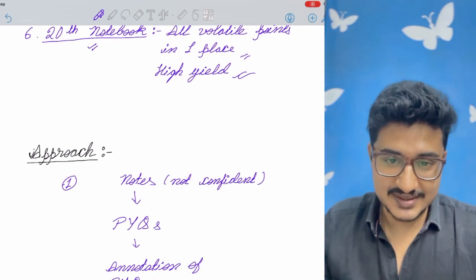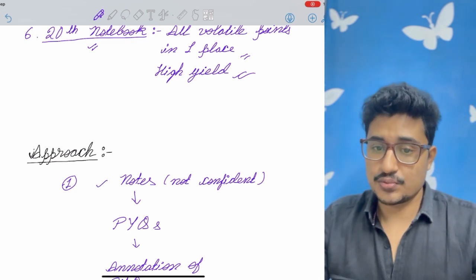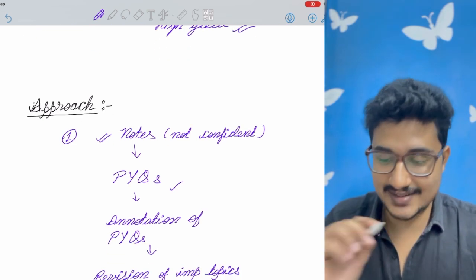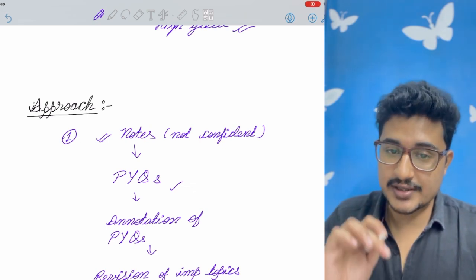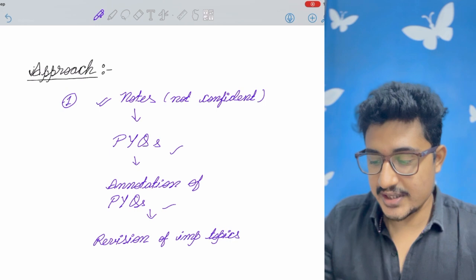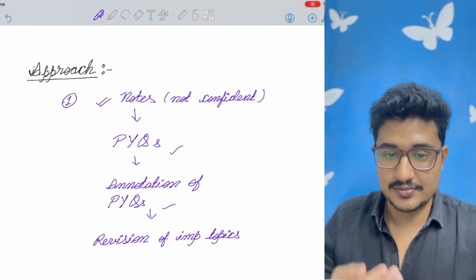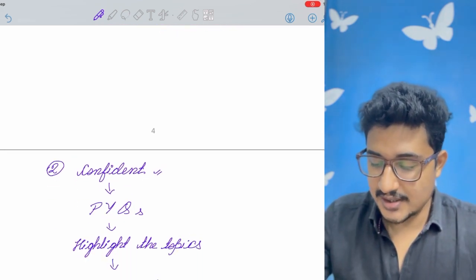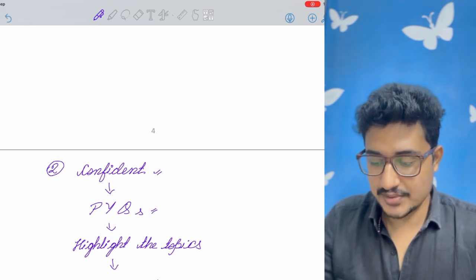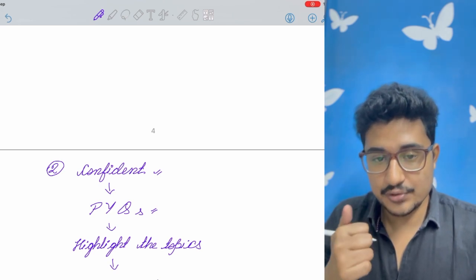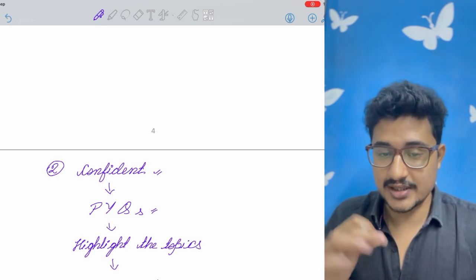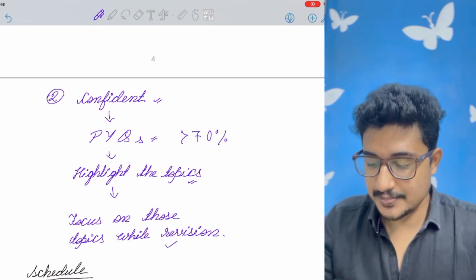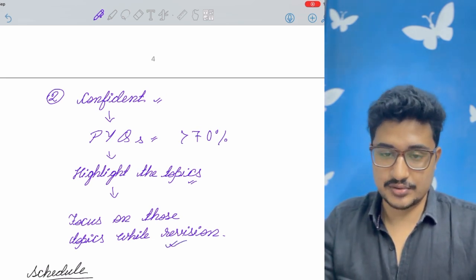Approach. So there are two types of approach. First is that in a subject you are not confident. You should go at first with the notes. You should read the notes properly. After that you solve the PYQs of that subject. Then you do annotation of the PYQs in your notes. Then during revision you just revise the important topics from which the PYQs are being asked. Another approach is that if you are confident in that subject, then you can directly practice the PYQs. And by recall method, you will try to know that how much you know and how much you are actually confident. Are you really strong in that? If you are getting more than 70%, yes, you are strong in that subject. And now with the PYQs, highlight the important topics and focus on those areas while revision.